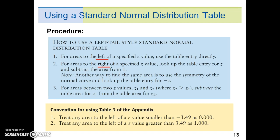As a note, another way to find the same area is to use the symmetry of the normal curve and look up the table entry for a negative z. The last type of problem: for areas between two z values, z₁ and z₂, where z₂ > z₁, subtract the table area for z₁ from the table area for z₂.